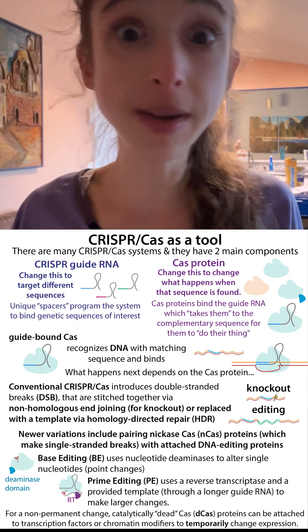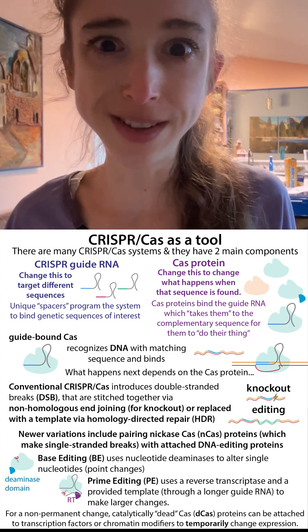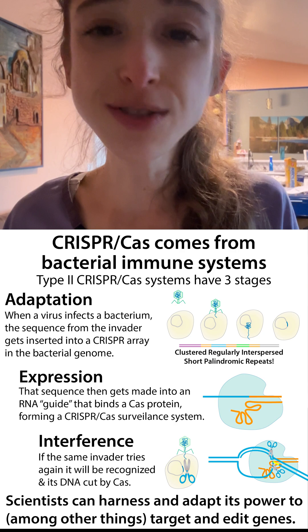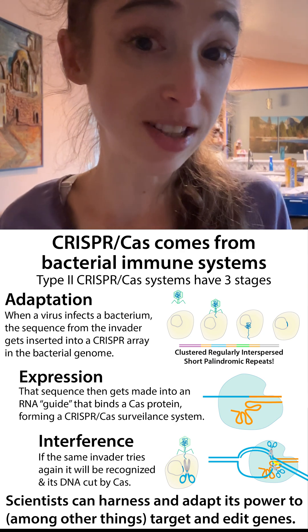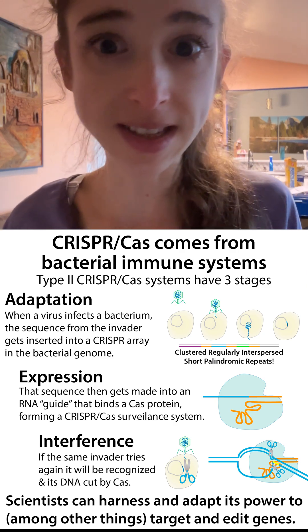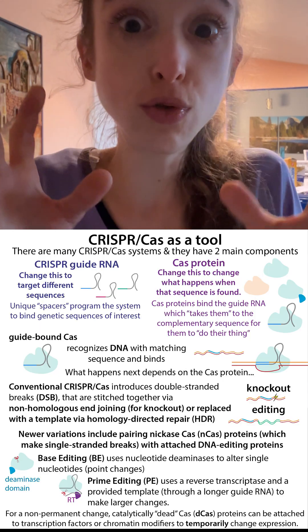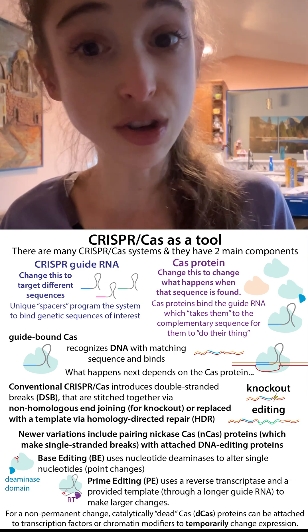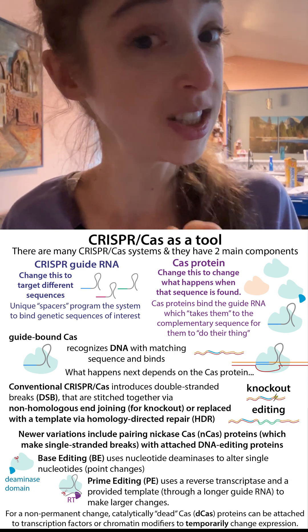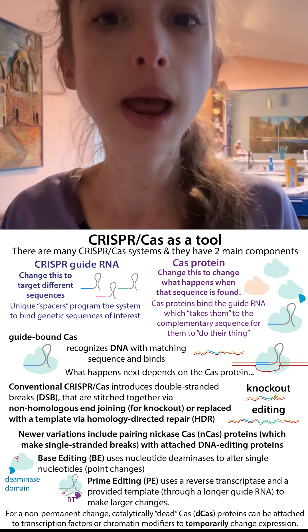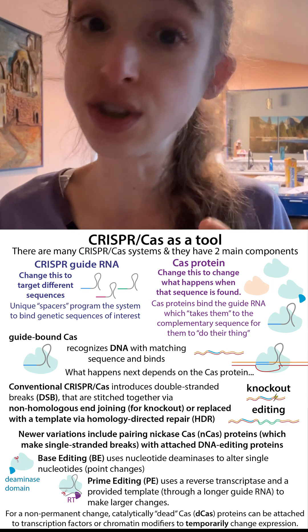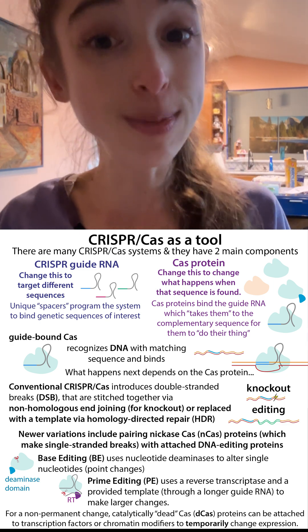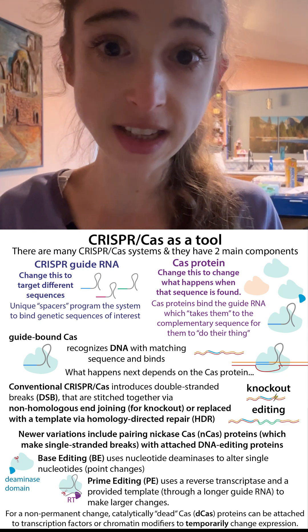When you hear about CRISPR, it's becoming increasingly important to think about what type. Because CRISPR, from its origins as a bacterial immune system, has now become a huge toolbox of molecular tools that scientists can use not just to silence or knock out genes, but actually to do things like alter their expression or make specific edits in those genes.